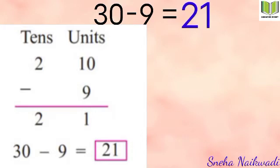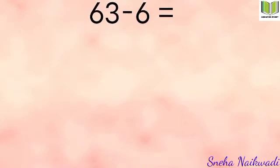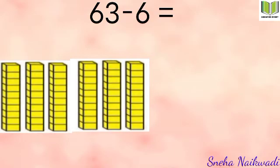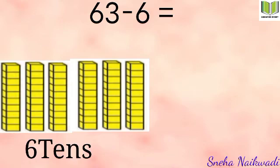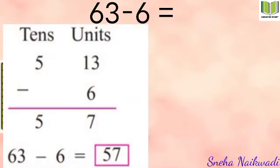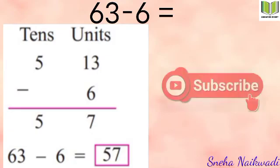Next: 63 minus 6. We cannot subtract 6 from 3, so we untie one ten. There are six tens — we write 5 on the tens place, and that loose 10 goes towards the 3 units, making 13 units. Now 13 minus 6 equals 7, and 5 remains on the tens place. So 63 minus 6 equals 57.